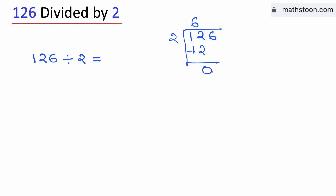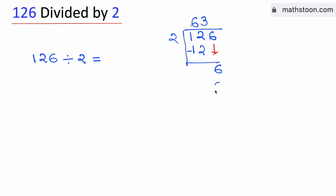Now, 0 is less than 2, so we will bring down the number 6 here. Now we have the number 6. Again, we know that 2 times 3 is 6. Subtract, we get 0.